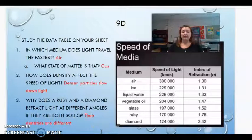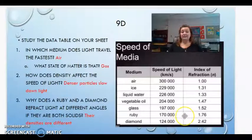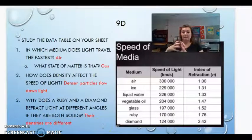Why does a ruby and a diamond refract light at different angles if they're both solids? So you can look on here and you can see here's a diamond and here's a ruby. And they are indeed at different speeds. Diamond is going much slower than a ruby, even though they are both solids. And that's just because they have different densities. A diamond is much more dense than a ruby. So its particles are packed so much tighter than a ruby's are. So light takes longer to navigate through those particles to get all the way through them.